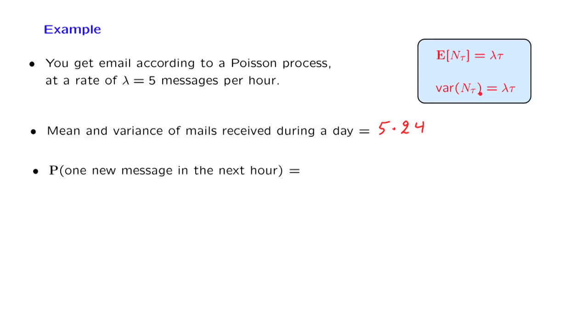What is the probability that we get one new message in the next hour? This has to do with the PMF of the number of arrivals during the next hour, and that PMF is given by the Poisson probabilities. We're asking for the probability of one new message, so K is equal to 1, in the next hour, so tau is equal to 1.